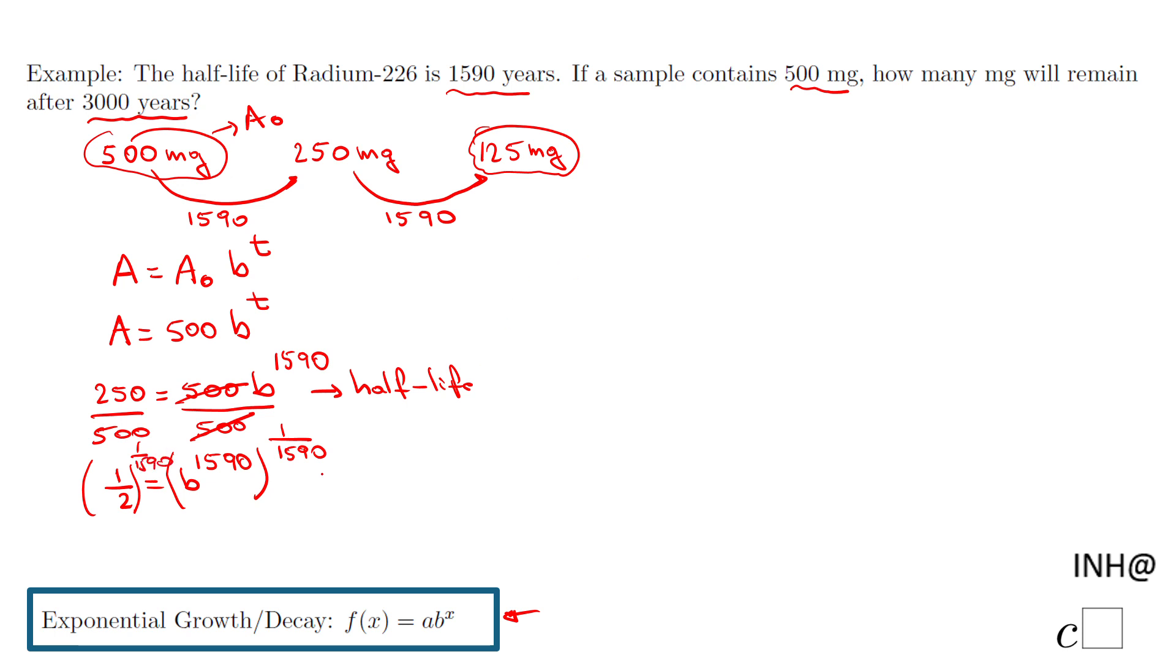So we have b equal, and now I'm going to have that 1 over 2, or 0.5, you can put either way, in the calculator raised to the power of 1 divided by 1590.